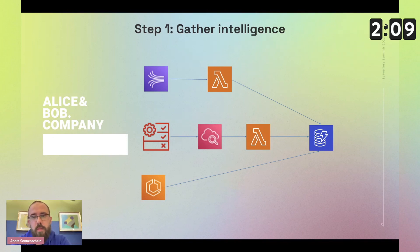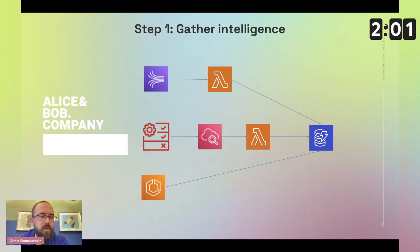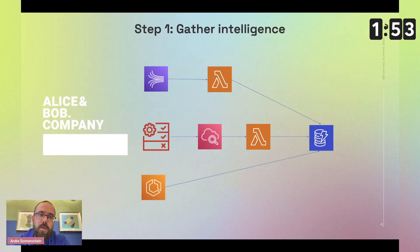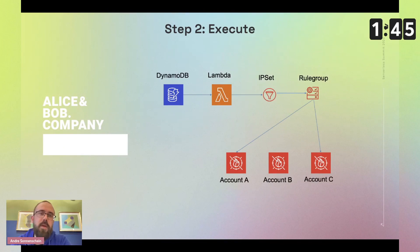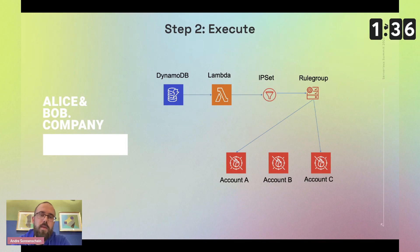I would suggest feeding the data into DynamoDB to directly attach time-to-live information, since IPs are not stable. Once you have a list of clients violating your rules, the next step is to execute on it — use a Lambda to take these IPs, fill them into an IP set, and use that IP set to define a rule group which then blocks attackers.